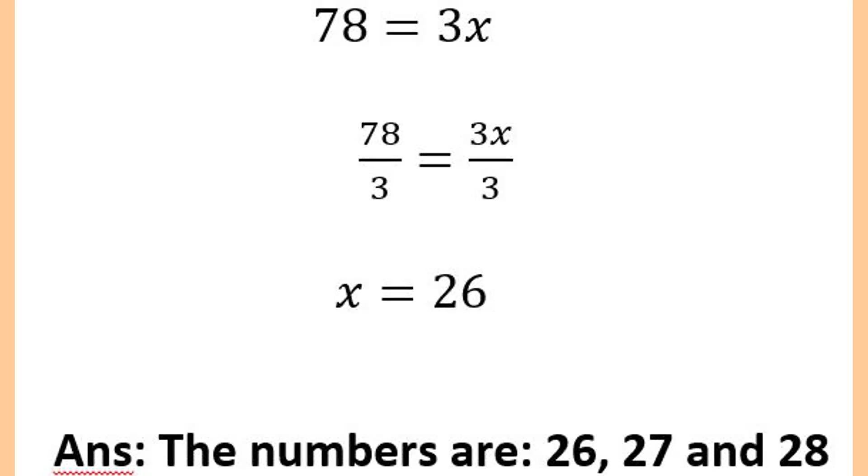And when we divide everything by 3, then x becomes or x equals 26. That simply means that out of those three consecutive numbers, the first number is 26.